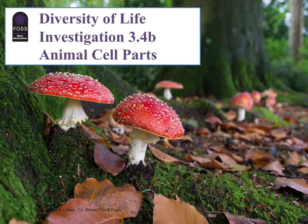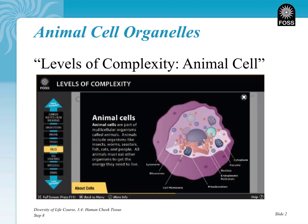One of those was that big dot in the center of our human cheek cells. Today, we're going to look at even more of those smaller ones that we can't see and compare what we see inside our human cells with what the elodea and paramecium cells have in common and how we are different. To do that, we'll be using fossweb.com, looking at these levels of complexity in the multimedia section of the Diversity of Life.